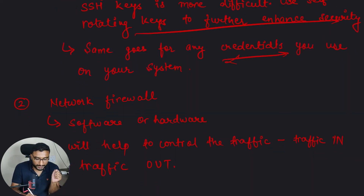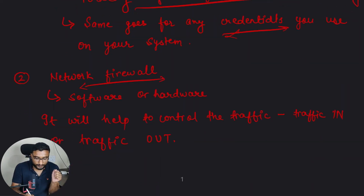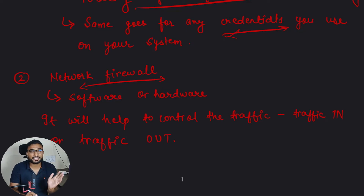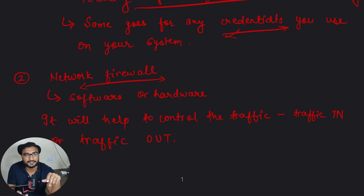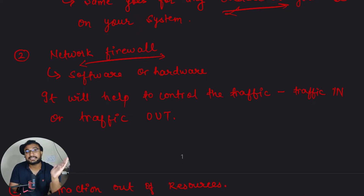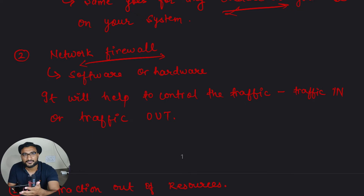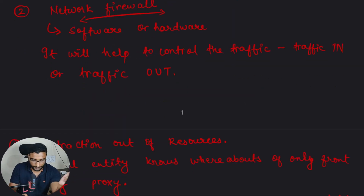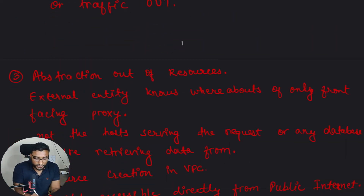Moving to another point: network firewall. A network firewall can be a software or hardware component. Its basic intent is to filter out any unwanted traffic. You control the traffic going into and out of your system so that any unintended traffic is not hitting your actual servers, which could cause an attack.